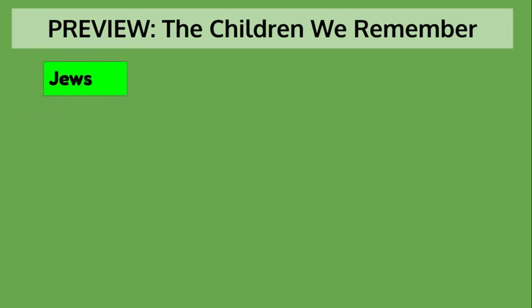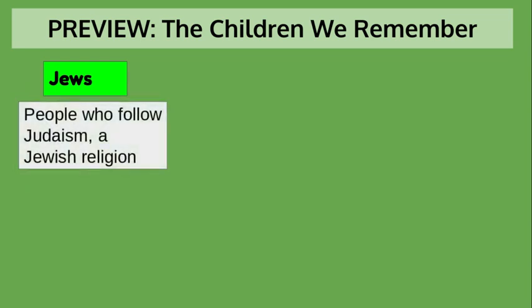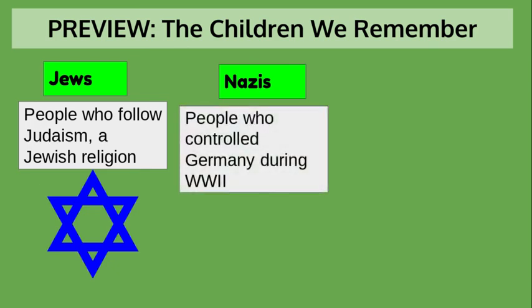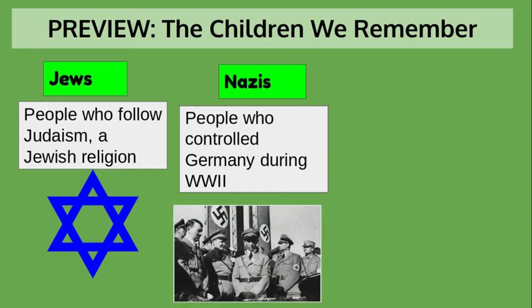Jewish people are those who follow Judaism — it's a Jewish religion. And if you see that symbol, it's called the Star of David. The Nazis were people who controlled Germany during World War II. The sign in the back of this photograph is called a swastika, and it was a symbol of hatred towards the Jews.